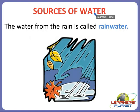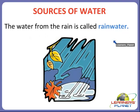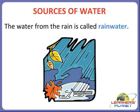We get water from the rain, and the water from the rain is called rain water. See in the picture — this is rain water. So from where do we get water? We get water from the rain.